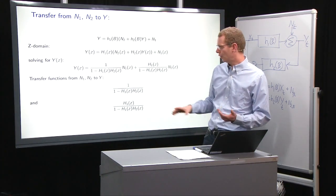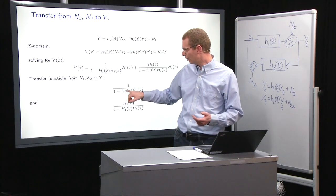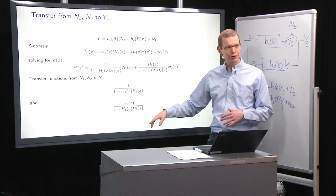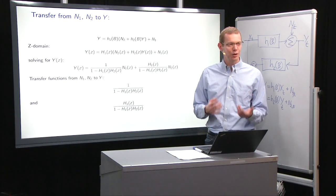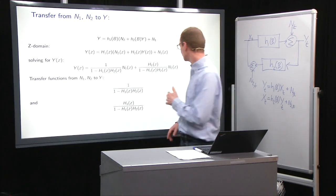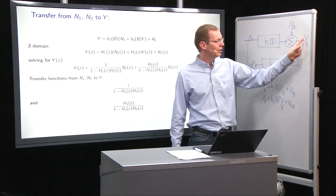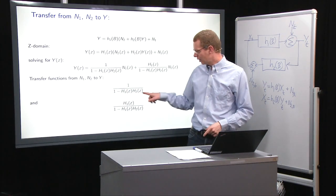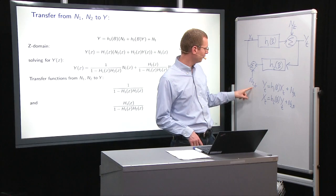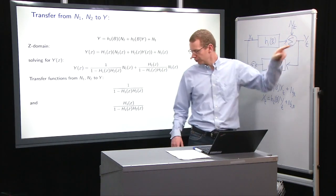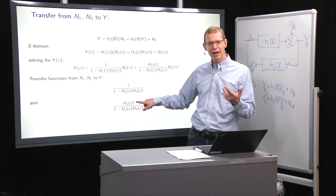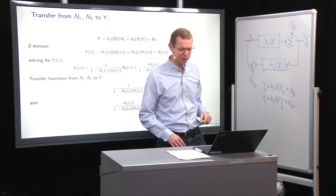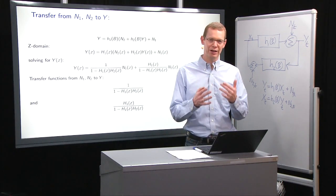So the transfer functions for the individual part is for N1 to Y is 1 divided by 1 minus H1 of Z times H2 of Z. And for N2, the main difference is that the numerator is H1 of Z instead of just a 1. Now intuitively, we're looking at YT. N1 gets out directly, but there's also a closed loop contribution that gives you the denominator here. Whereas the noise that comes from N2 has to go through H1 before you observe it. So therefore, it makes sense that you drag it through H1 here before, and then you look at again what is the closed loop add-on to this.